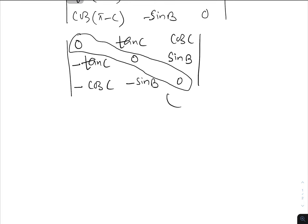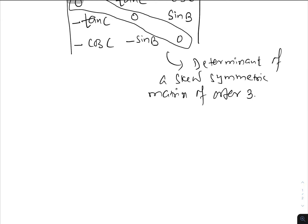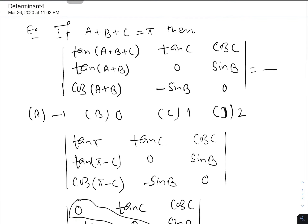We note that the diagonal elements are all 0. And we have tan c, minus tan c; cos c, minus cos c; sin b, minus sin b. This is nothing but the determinant of a skew-symmetric matrix of order 3, and so we know the value of the determinant is 0.